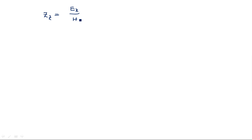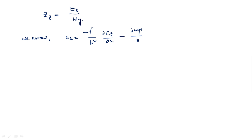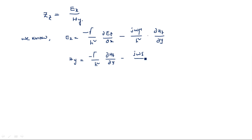We will consider wave impedance Z_Z which is E_X by H_Y. We know that E_X equals minus gamma over H-squared times ∂E_Z/∂x minus j·ω·μ over H-squared times ∂H_Z/∂y, and H_Y equals minus gamma over H-squared times ∂H_Z/∂y minus j·ω·ε over H-squared times ∂E_Z/∂x.